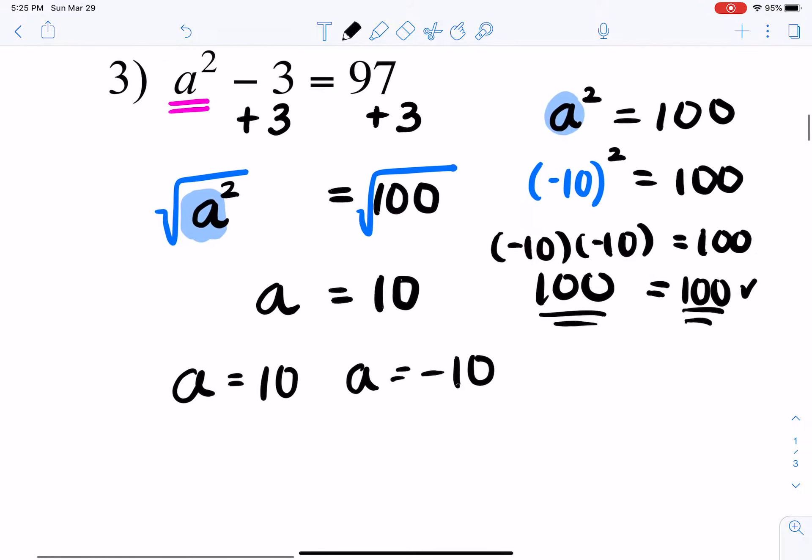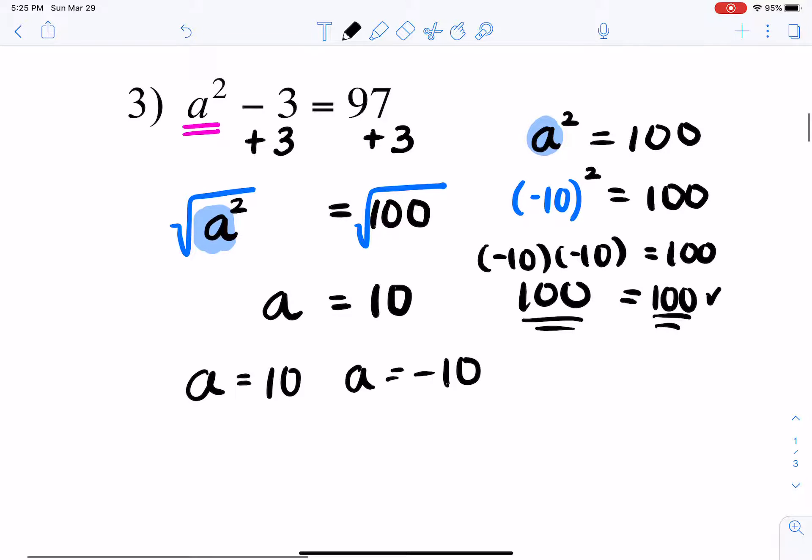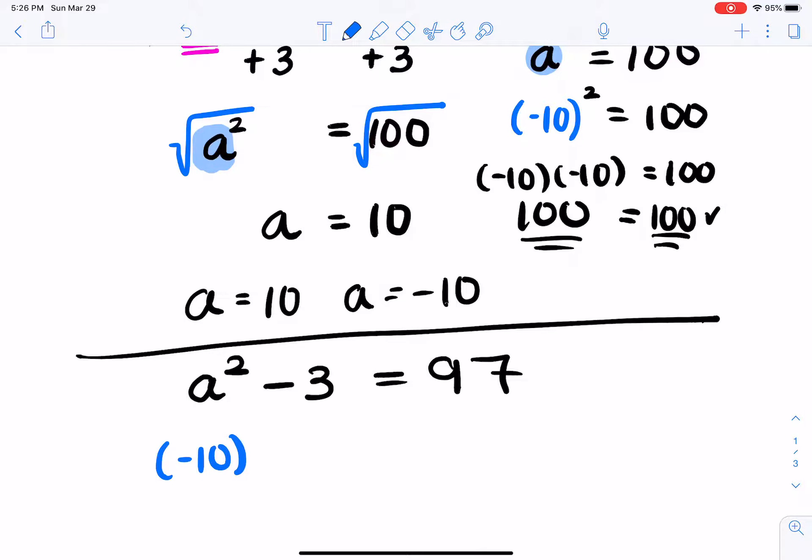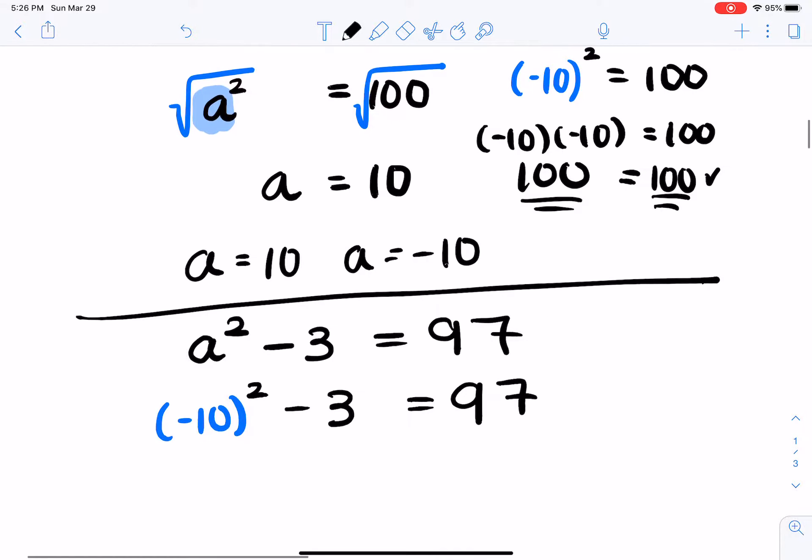And to further your thinking process, you can also plug it in to the original equation, which is a squared minus 3 equals 97. And if you plug in negative 10 to a squared minus 3, it should equal 97. So negative 10 squared is 100 minus 3, which should equal 97 if this is true.